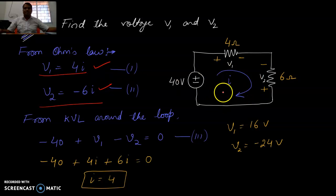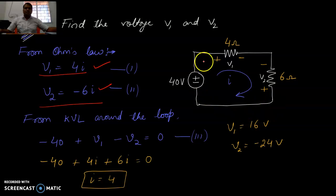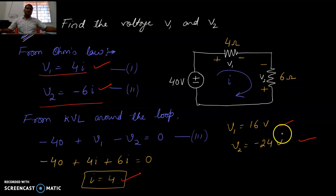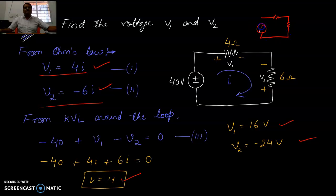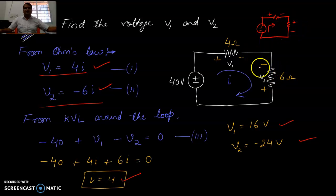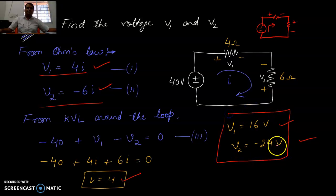Same current flows through the loop, so from Ohm's law V1 equals 4I and V2 equals minus 6I. Applying KVL around the loop and substituting gives current equals 4A, so V1 equals 16V and V2 equals minus 24V. Note: V2's polarity is intentionally made negative to confuse students — otherwise the answer would simply be V1 equals 16V and V2 equals minus 24V.